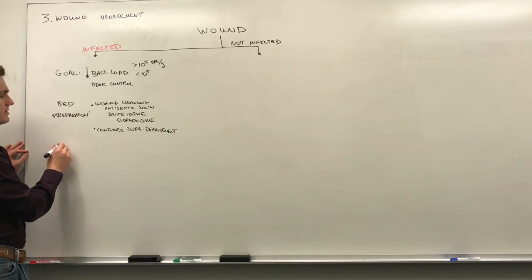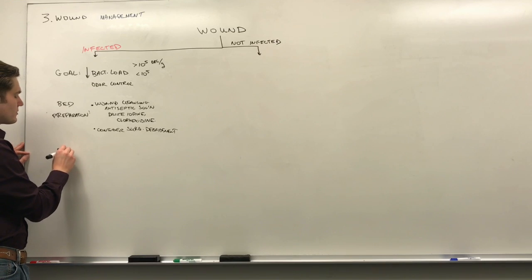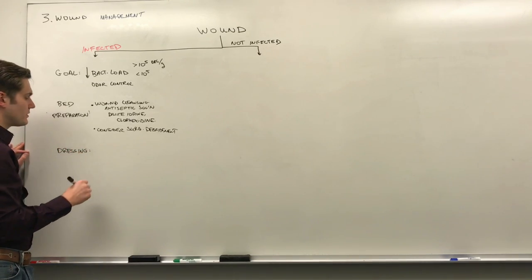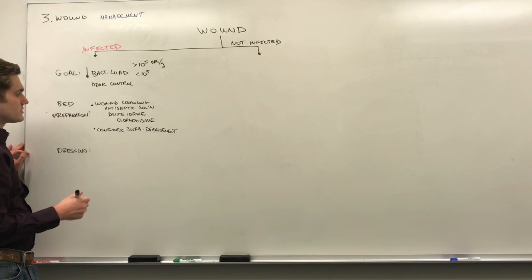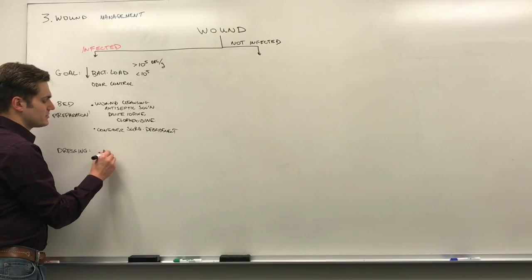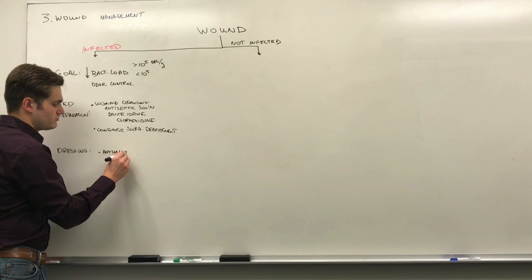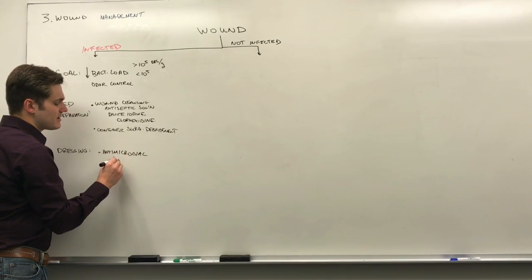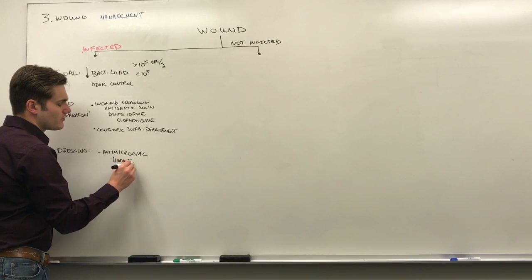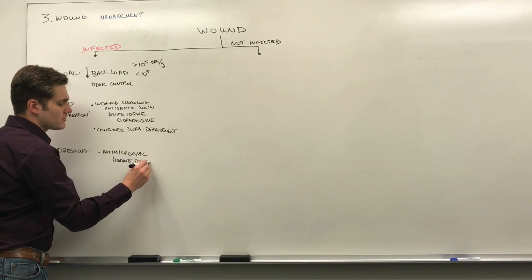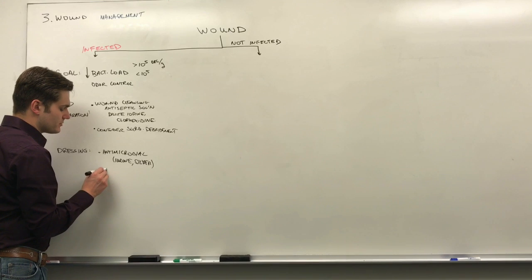So the dressing types that we're going to use, if you recall from the previous slide, for reduction of bacterial load, we can use an antimicrobial dressing, something that contains either iodine, like an iodoform, or something containing silver. And for odor control, we can use a charcoal dressing.